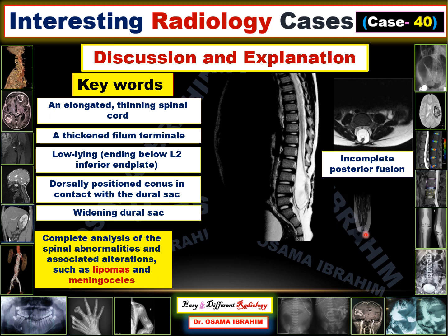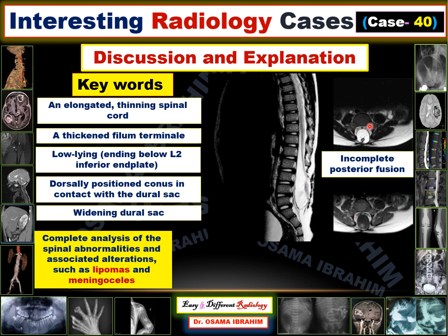However, lipomas are better seen on T1-weighted images, appearing as high signal lesions since they contain fat, presenting as a high signal lesion outside the dural sac. In this specific case, there is no lipoma or meningocele, but these should be excluded because tethered cord is associated with other abnormalities in the bones and soft tissue collections like lipomas and meningocele.